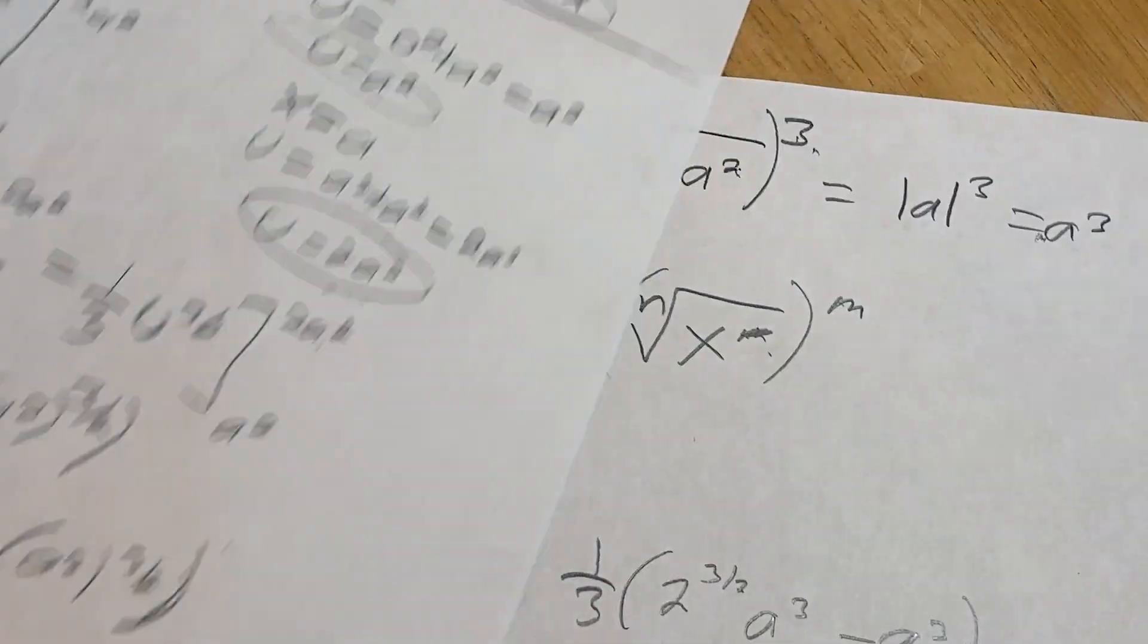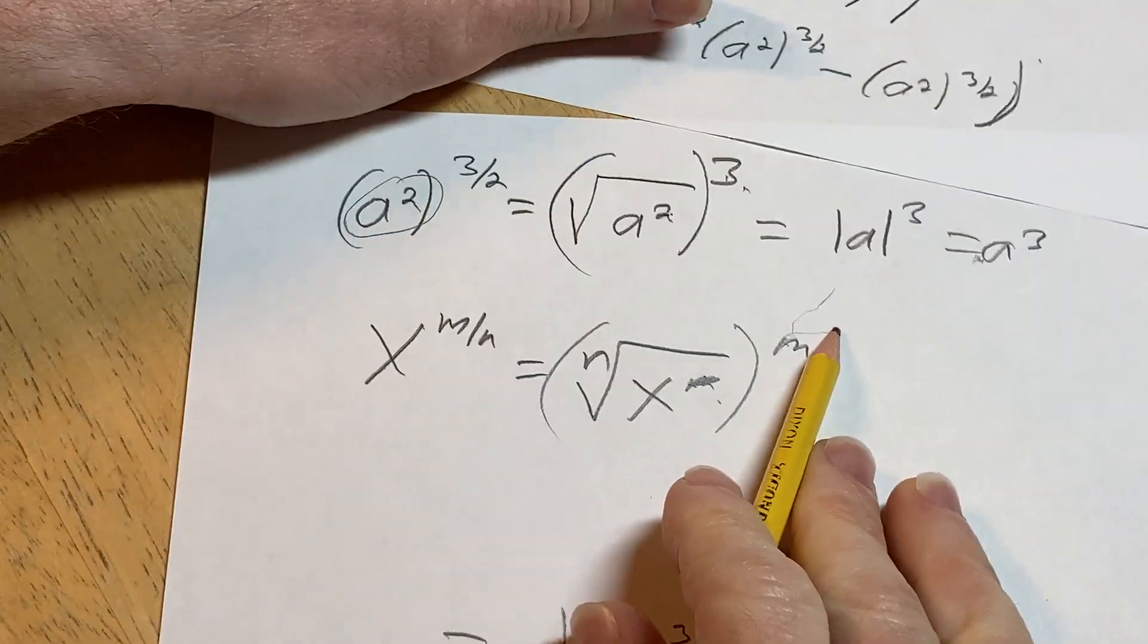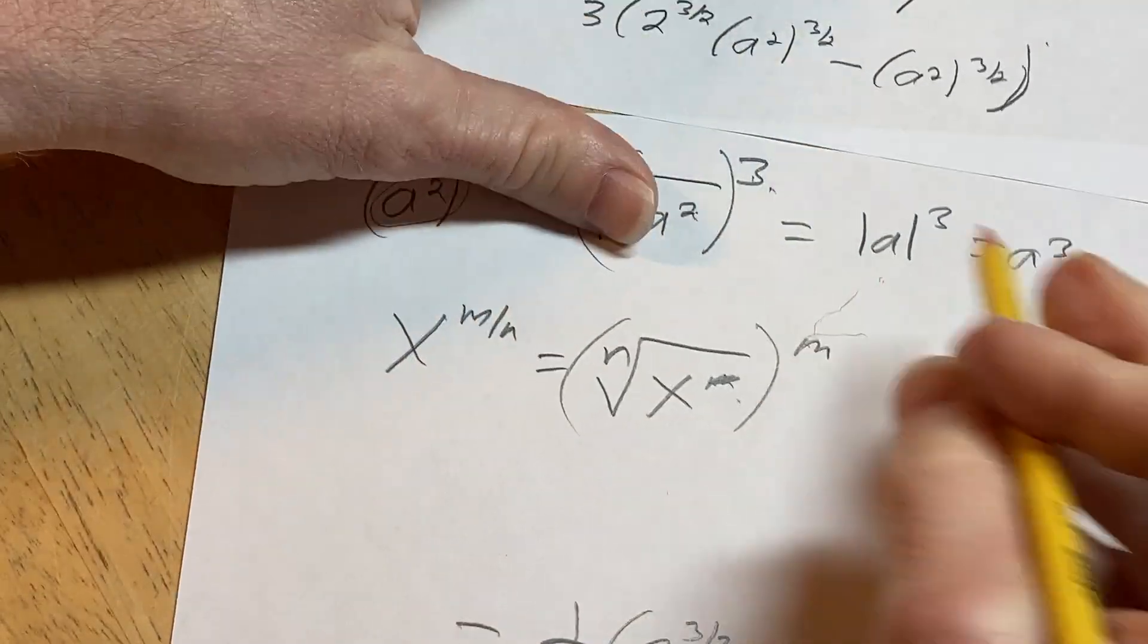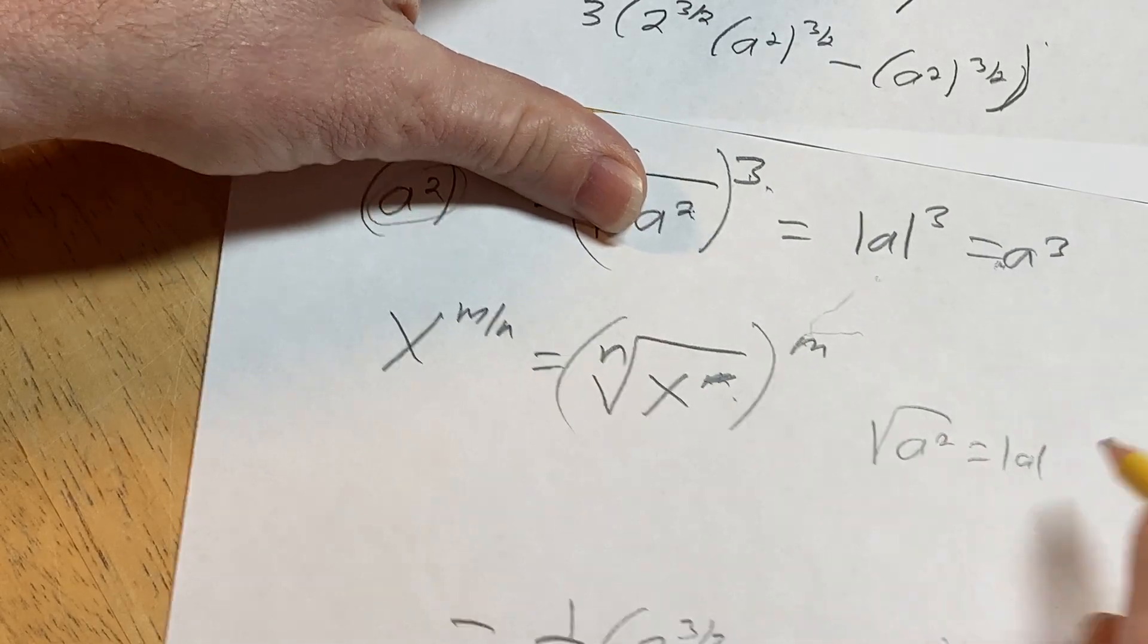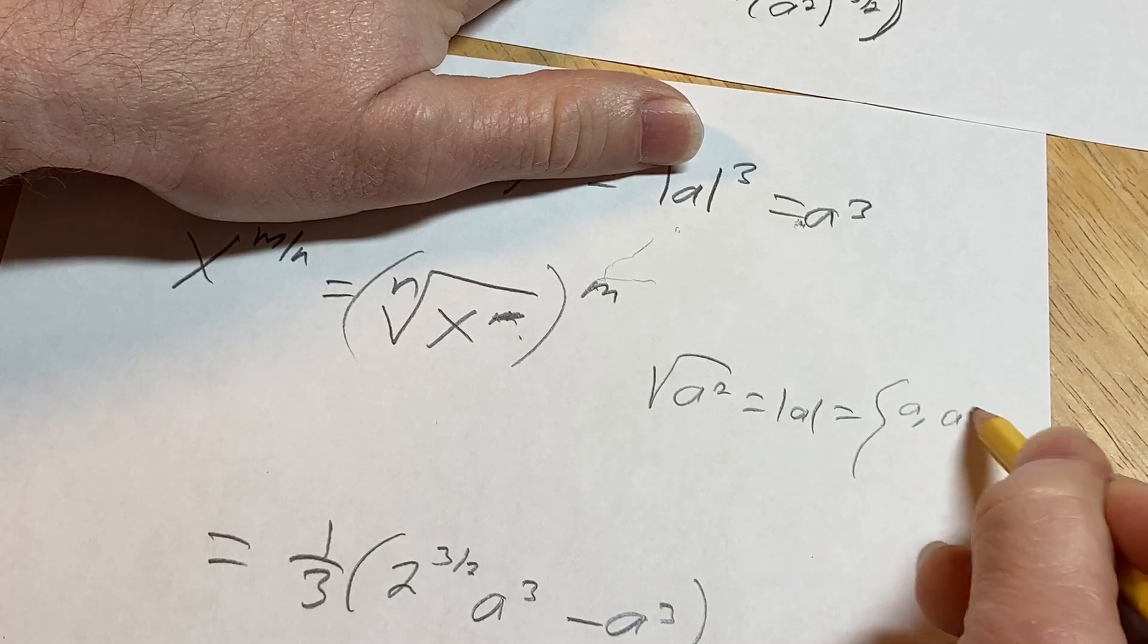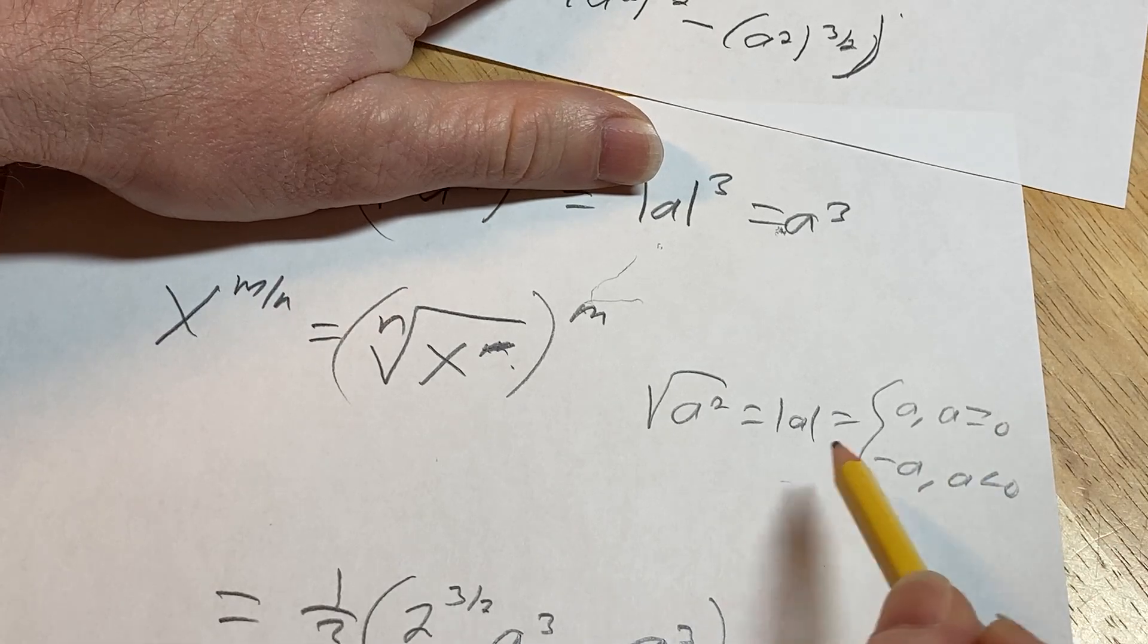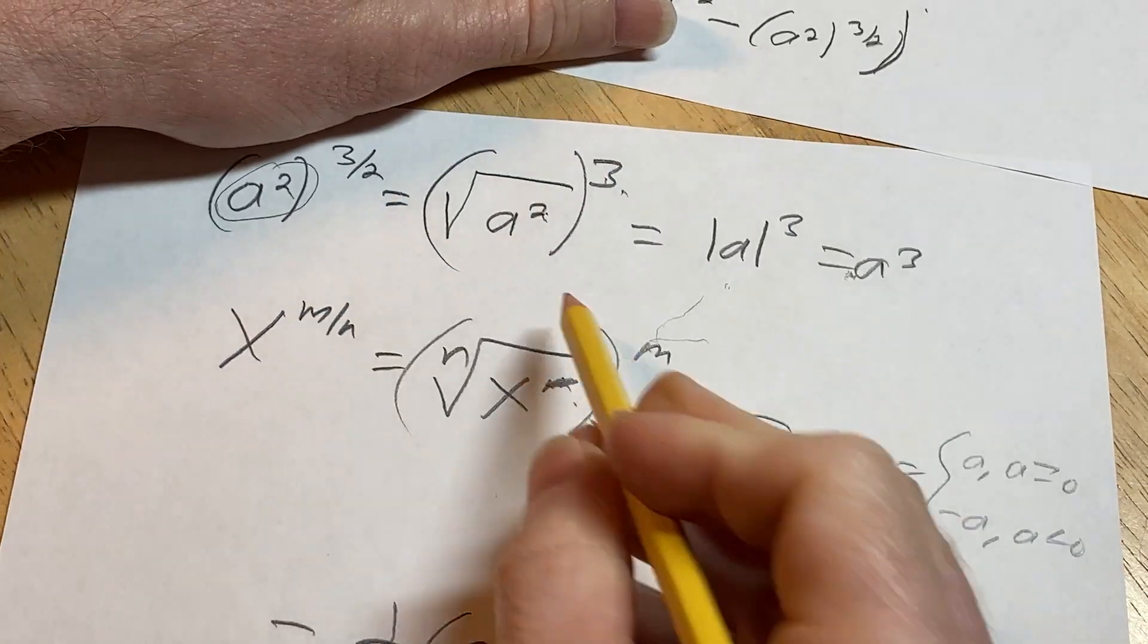But the point is that a was positive. And so that is something that happened there. Like, if a was negative, it would be different. And this is because the square root of a squared is equal to the absolute value of a, right? And that's equal to a if a is greater than or equal to 0, and negative a if a is less than 0.